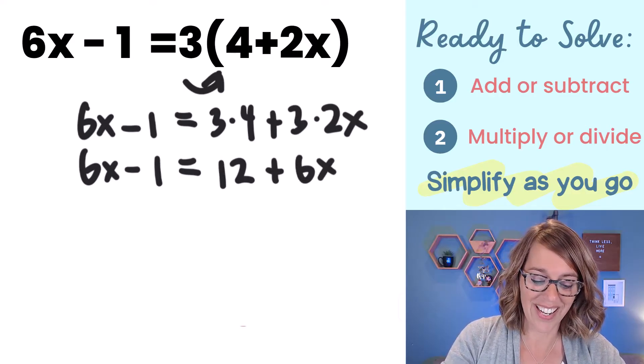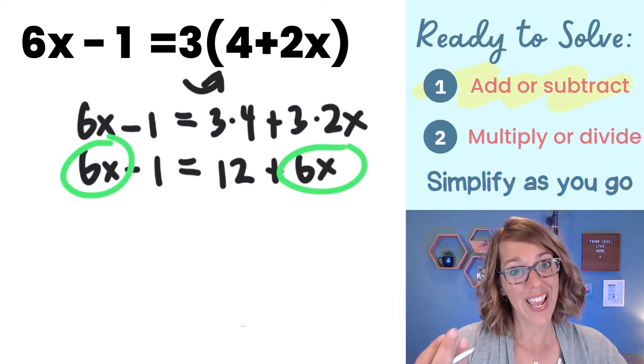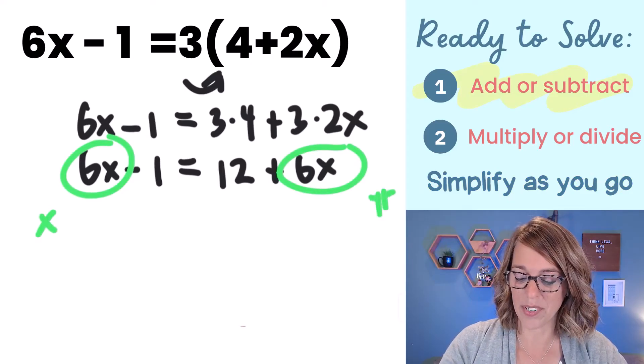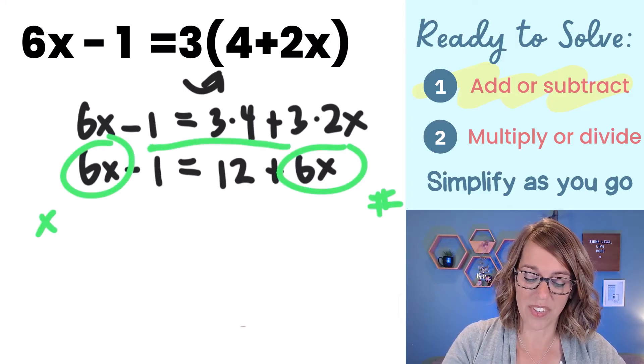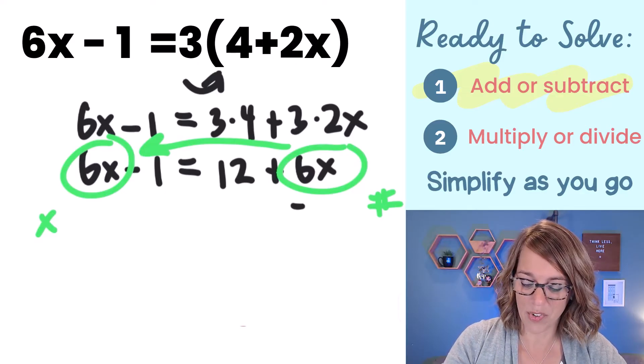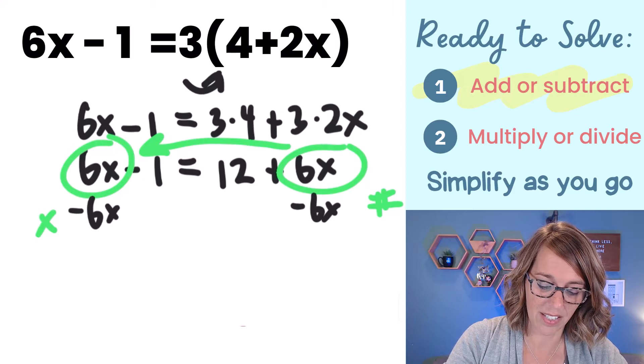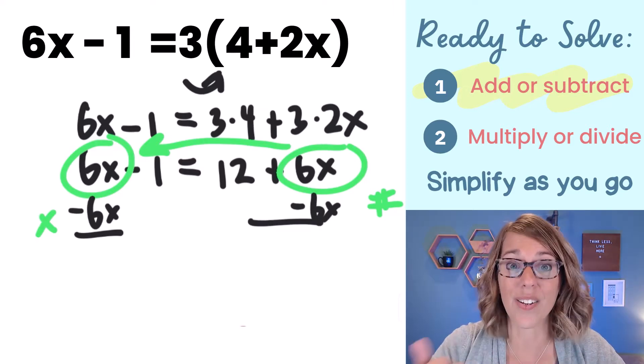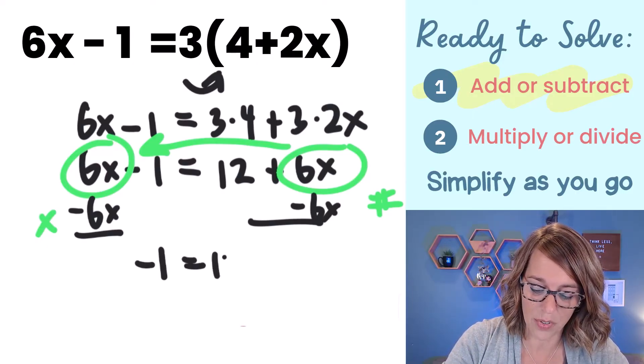So do you see what's going to happen? I've got a 6x on both sides. So as I attempt to get my variables on one side and my numbers on the other, here's what happens. Let's move this 6x from the right to the left. I'm going to subtract that 6x. And I end up with those 6x's canceling on both sides, and I get negative 1 is equal to 12.